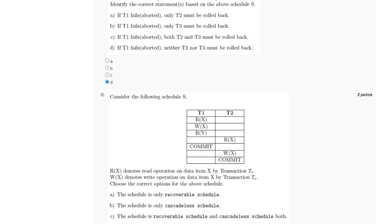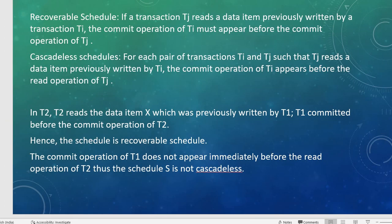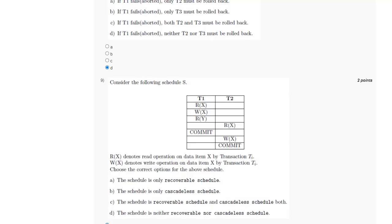For the ninth question, we have to determine if the given schedule is recoverable and cascadeless. For a schedule to be recoverable, if transaction Tj reads a data item previously written by Ti, then Ti must commit before Tj commits. For the schedule to be cascadeless, Tj should only read data items written by an already-committed transaction. In this case, T2 reads data item X previously written by T1, and T1 committed before T2's commit, so the schedule is recoverable. However, T1's commit does not appear immediately before T2's read operation, so the schedule is not cascadeless. The answer is option A: the schedule is only recoverable.